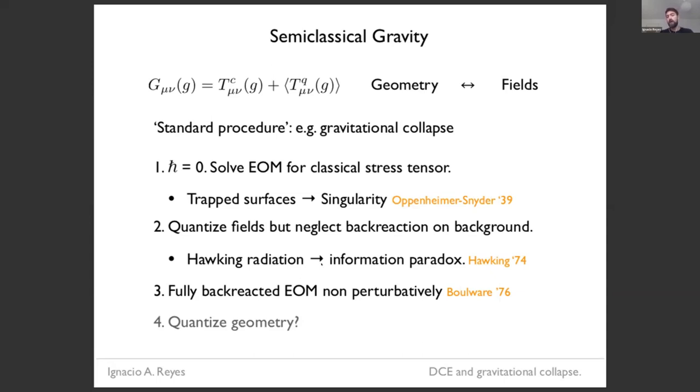As a second step, we can quantize the fields on top of that fixed background, but completely neglect their back reaction on the metric. And this is essentially what Hawking did. We know that this leads to Hawking radiation and to the information paradox problem. Now as a third step, one would like to solve the back reaction problem, this equation over here, non-perturbatively, but this is of course a very hard problem. Now the last step, which is more conjectural, is we say maybe we have to quantize everything, including the geometry. And although we have some examples of this, it's not completely clear, I think, what are we supposed to do?